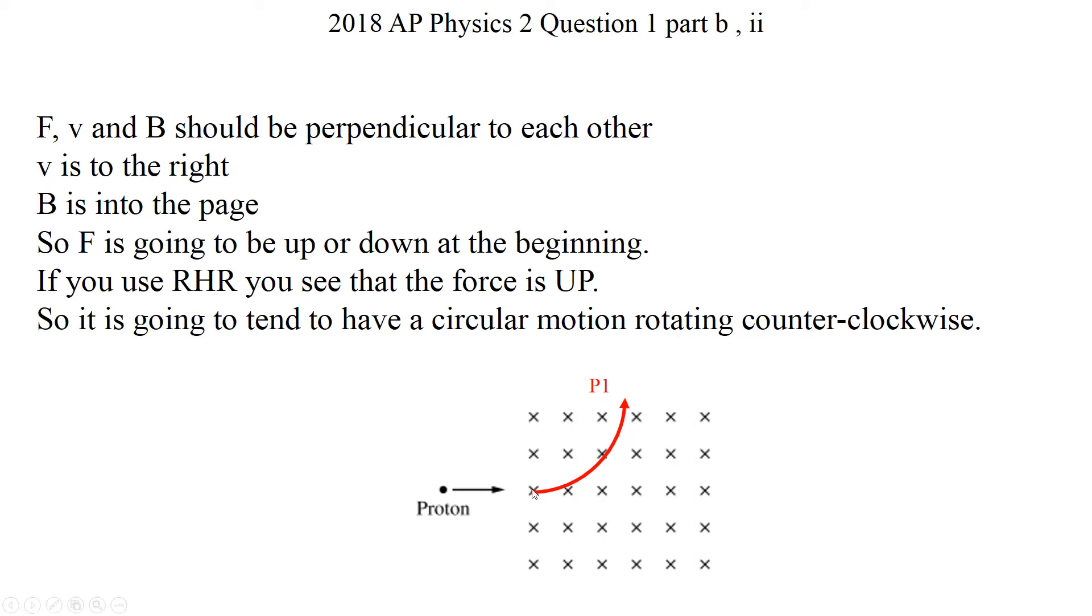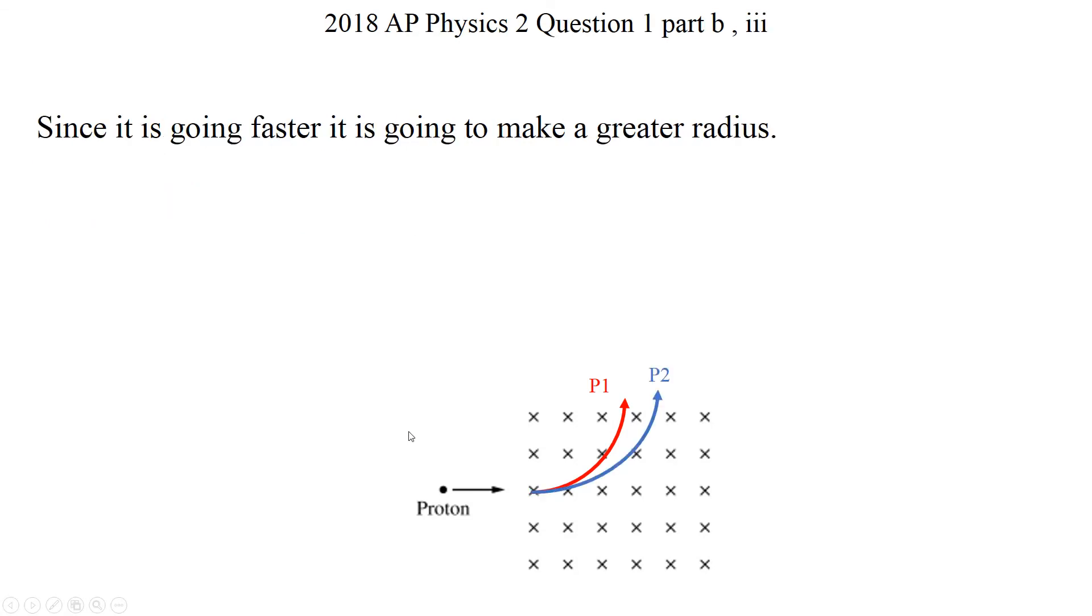So when it goes up, that means initial force acting on that proton is going to go like this. And after this point, if you continue that right-hand rule, you're going to be seeing that it is going to have a circular motion in this magnetic field. And basically, this is going to be the path of the charge in that region.